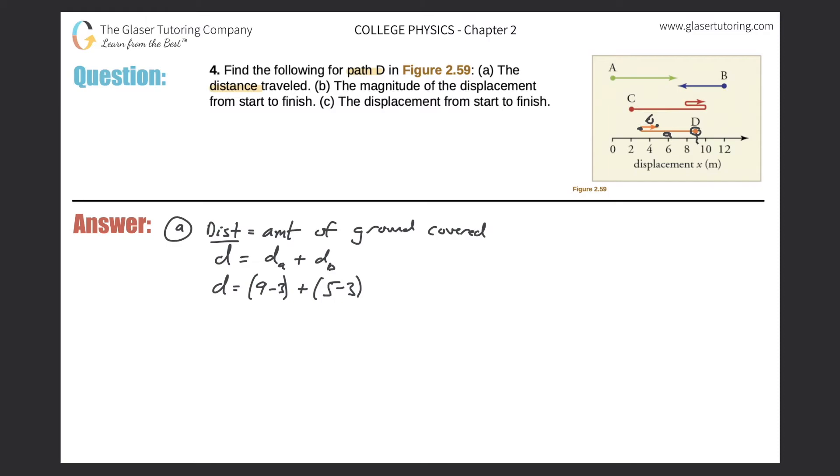Now I put the larger value first for both because I'm not interested in the sign - I want the positive value with the absolute value, because that's what we need to do to calculate distance, the total ground covered. So 9 minus 3 is simply 6, this is all in meters. 5 minus 3 is 2. So the total distance covered here for path D is going to be 8 meters.